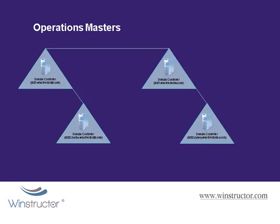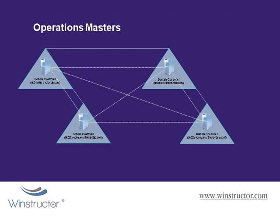When Active Directory arrived in Windows 2000, things changed. Windows moved from a centralized PDC model to a decentralized model using multi-master replication, where changes could be made on any domain controller and replicated to all of the others. This meant Active Directory took us away from relying on a single server — the PDC — in order to administer our domain. If one domain controller was down, the others could still authenticate users and make configuration changes.